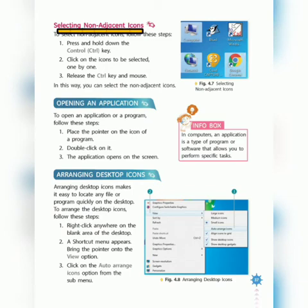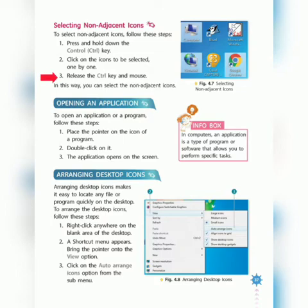Next is selecting non-adjacent icons — non-adjacent means icons which are not closer to each other, i.e., selecting icons randomly. To select non-adjacent icons: step 1, press and hold the Control key and click on the icons to be selected one by one; step 2, release the Control key and mouse — the non-adjacent icons will be selected.